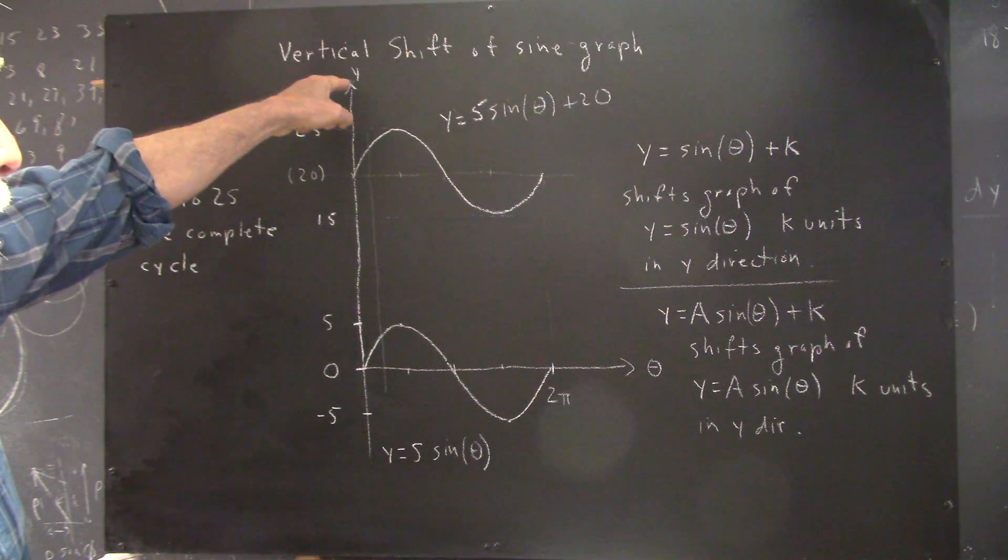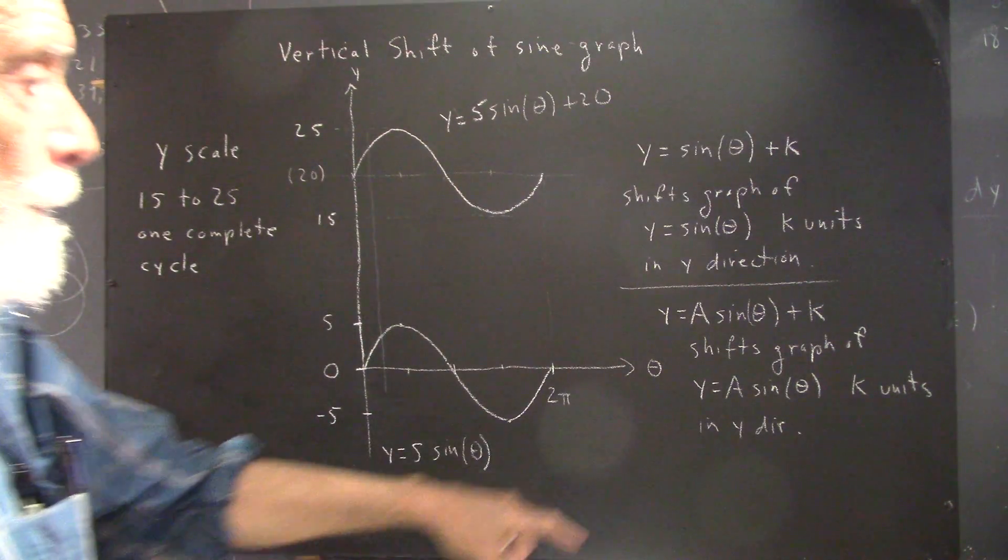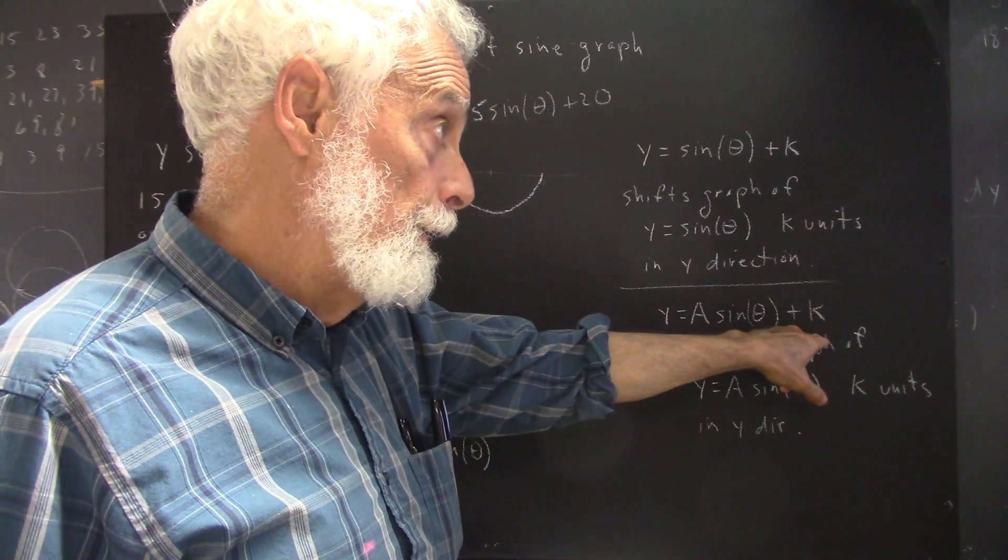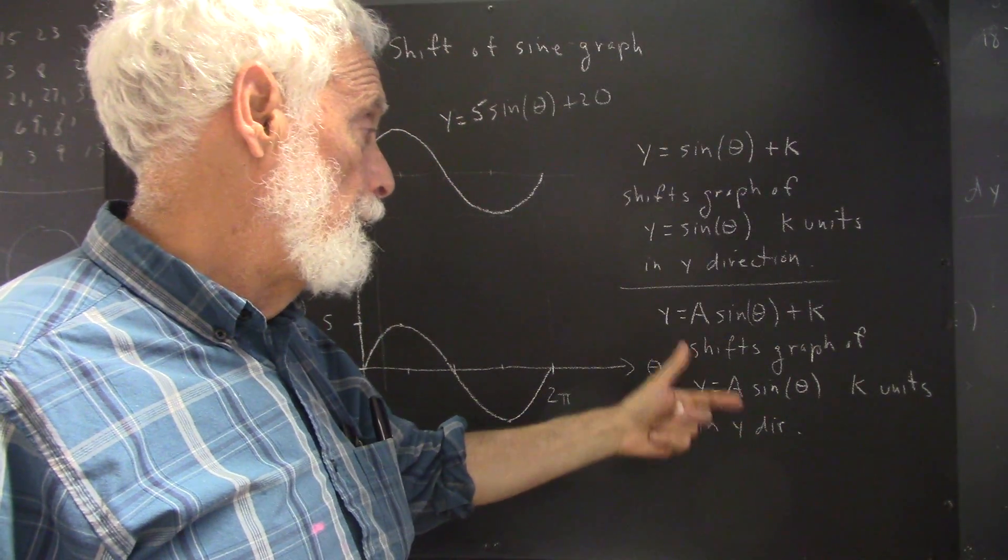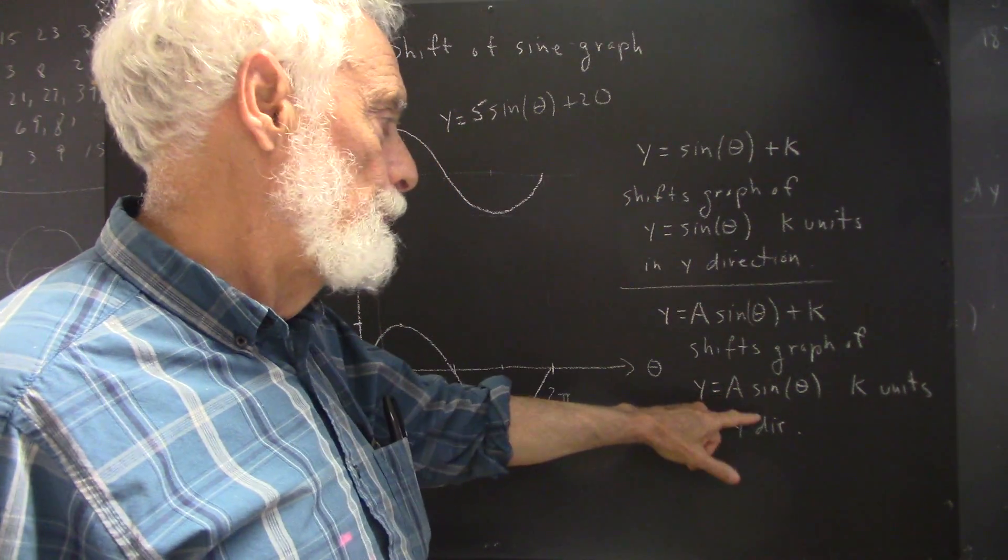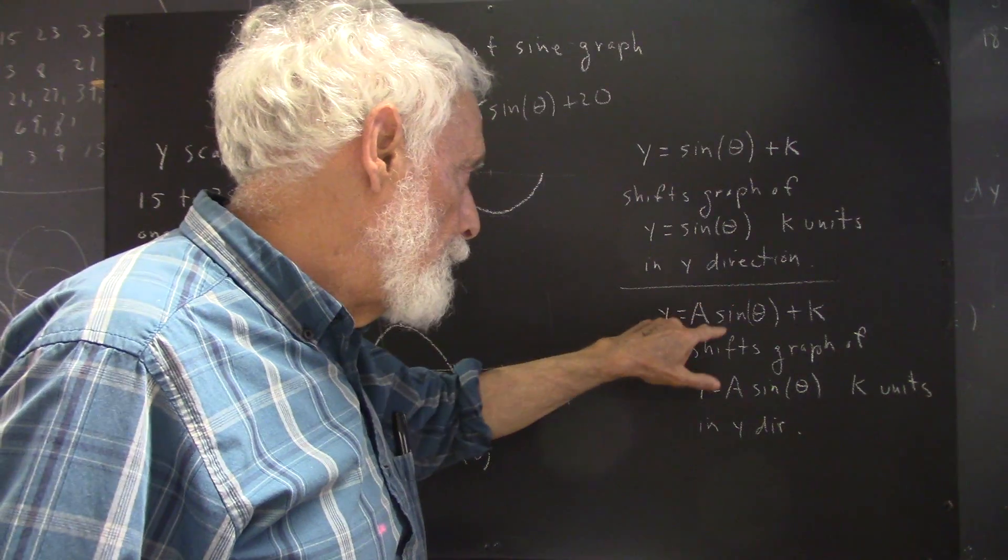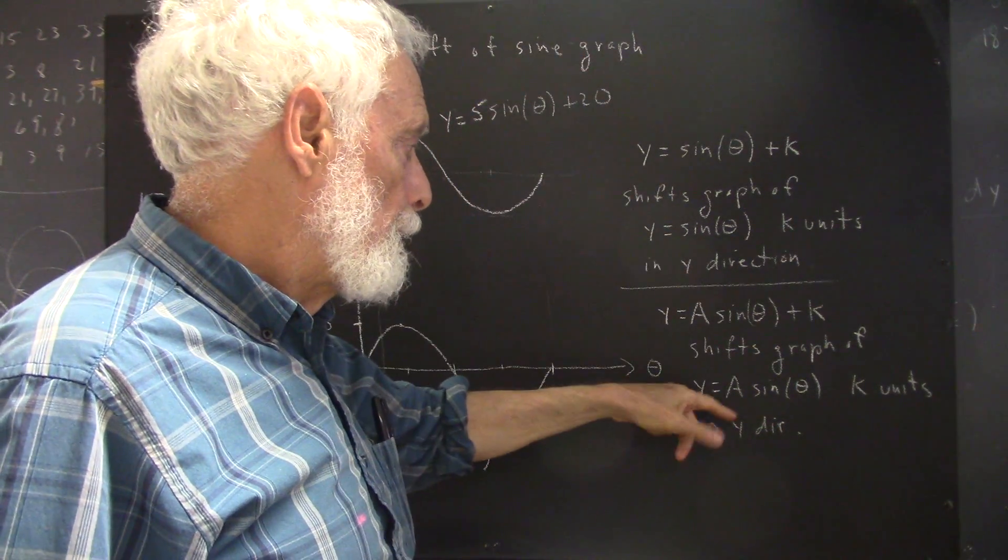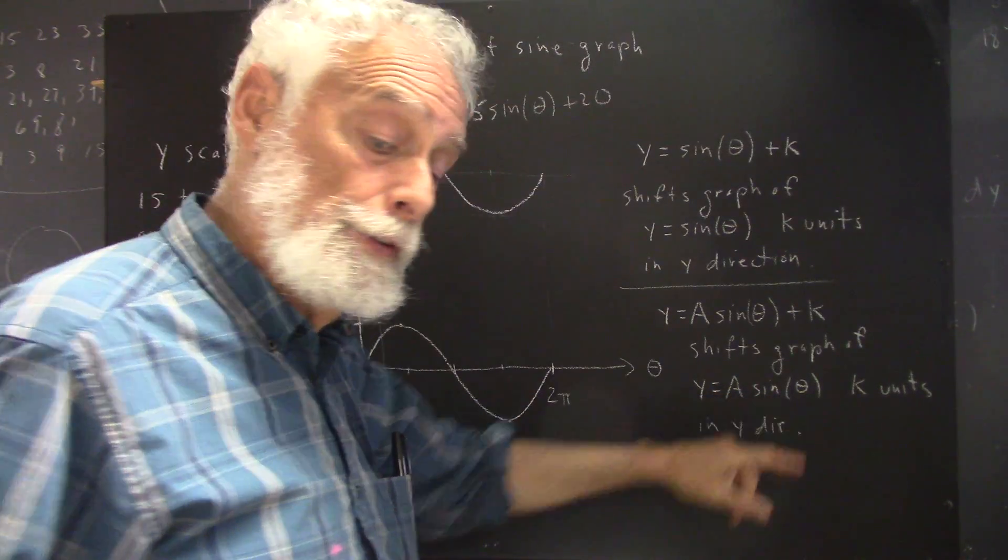Okay, so this is what we mean by the vertical shift of a sine graph. In general, if we have some multiple of the sine of theta and add k to it, we get the graph of... The graph of this function will be k units vertically shifted relative to the graph of this function.